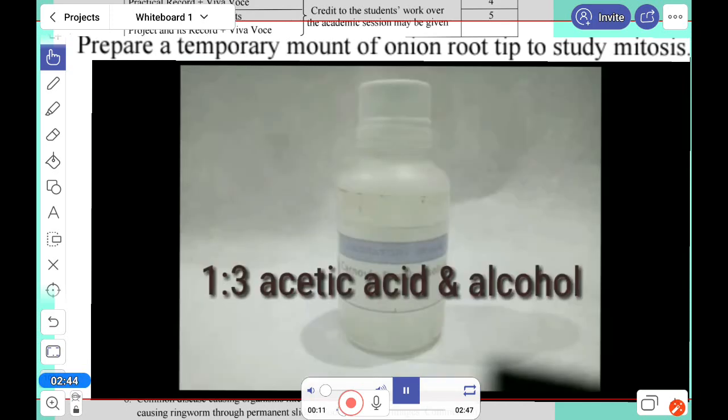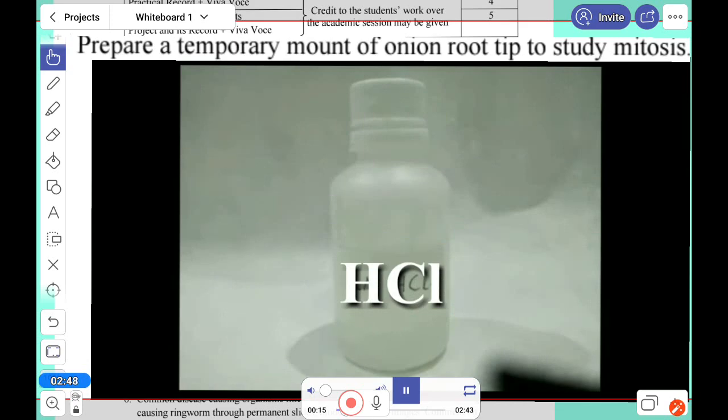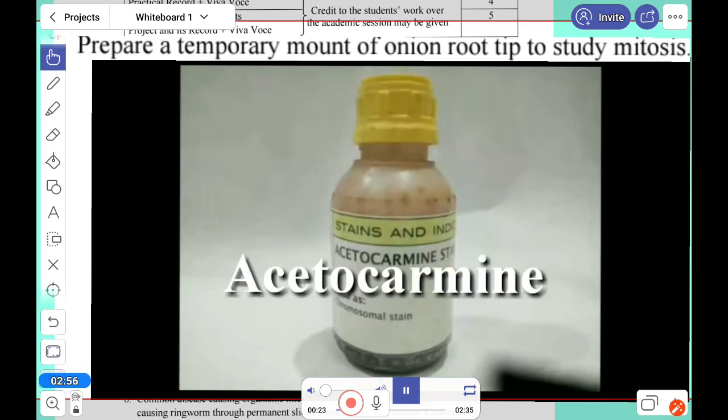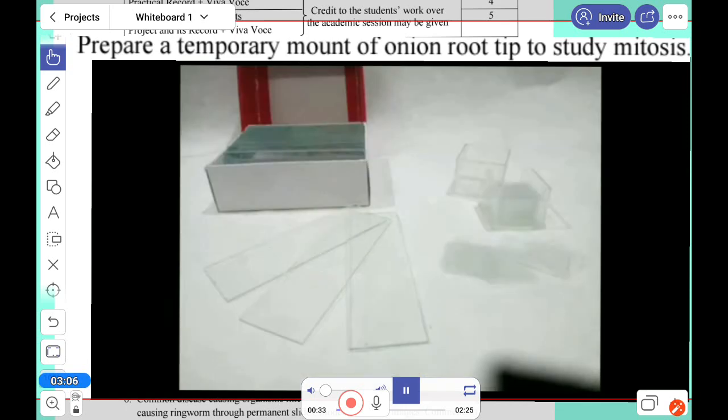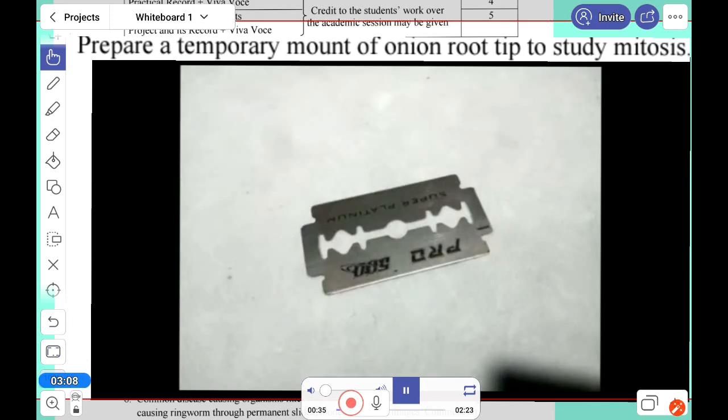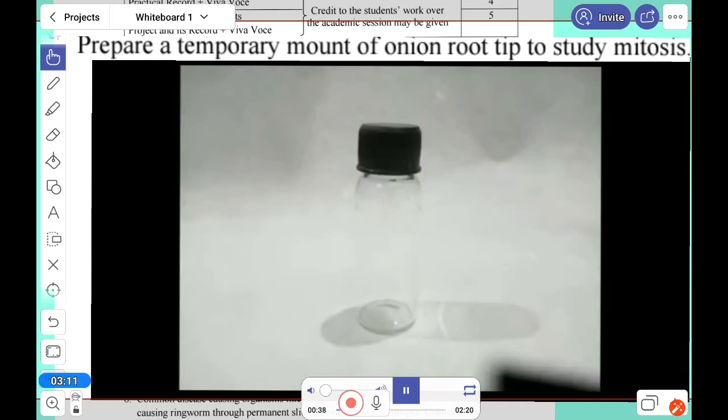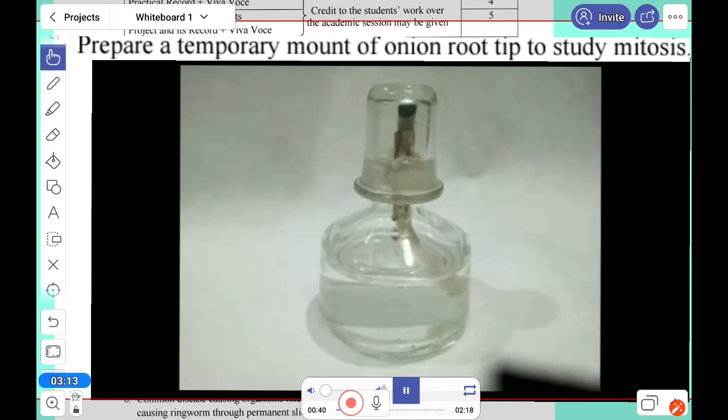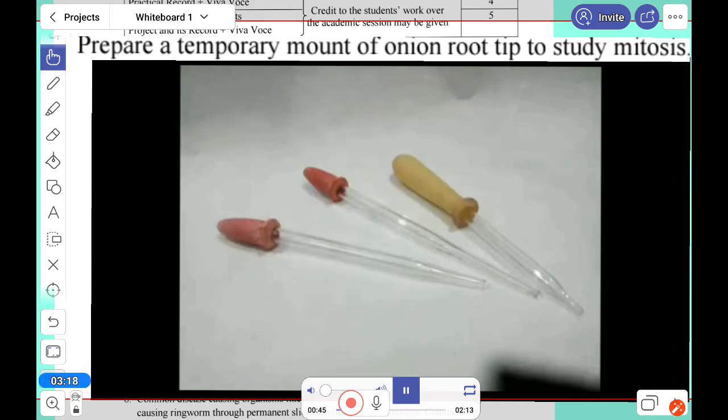We have to take acetic acid and alcohol, one is to three, that combination. Hydrochloric acid for softening the plant part and cells. Aceto-carmine, the stain which can stain the chromosomes so that the chromosomes will be prominent from the cellular different parts. Slides, coverslip required, one blade is required, watch glass, empty vial, and spirit lamp.